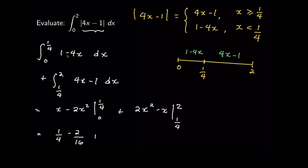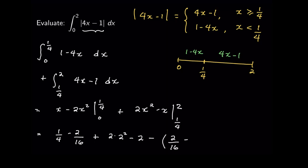For the second part, substituting x equals 2 gives 2 times 2 squared minus 2. Then substituting x equals 1/4 gives 2 times 1/16 minus 1/4. When we simplify, the result is equal to 25/4.